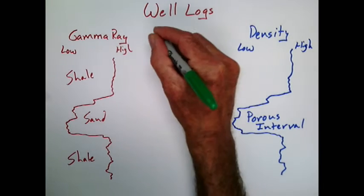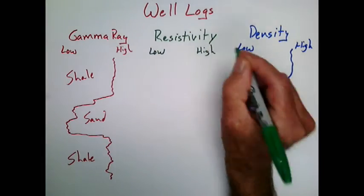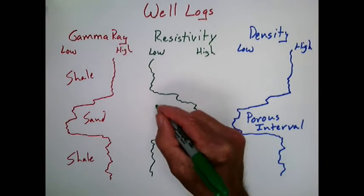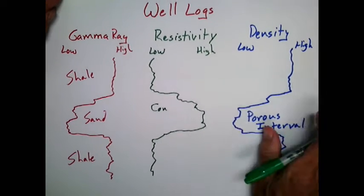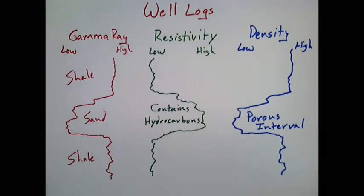And finally, to determine whether hydrocarbons are in the pore space or not, we shoot an electric current into the rock and see how conductive or resistive it is to current flow. Seawater readily conducts electricity, while oil and gas are insulators that are resistant to the flow of electricity. Therefore, pore spaces that are filled with hydrocarbons will have a higher resistivity than otherwise.